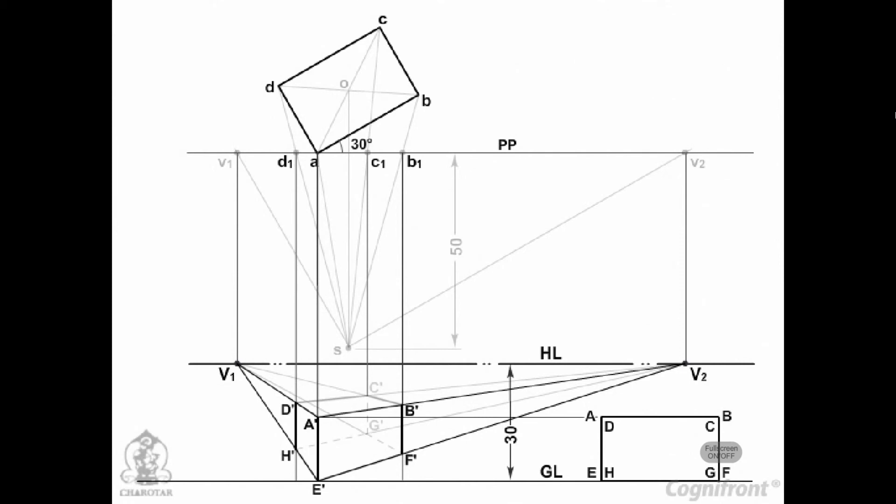Draw lines joining B' and F' with V1, and D' and H' with V2, intersecting at points C' and G' respectively. They must lie on the vertical line through C1. Note that lines meeting at G' are all hidden and therefore are shown dotted.